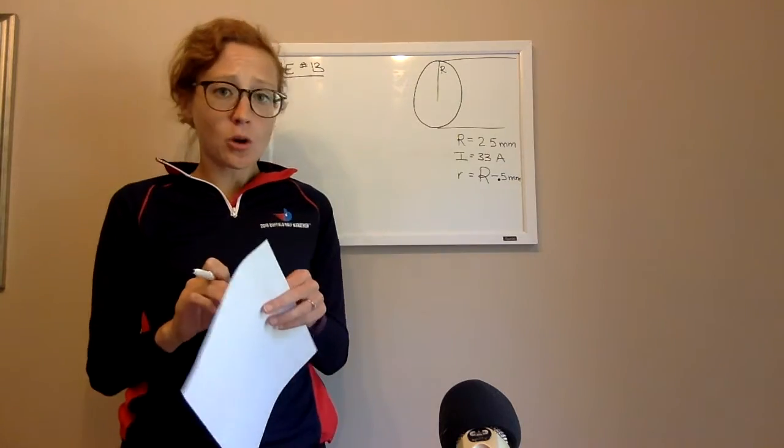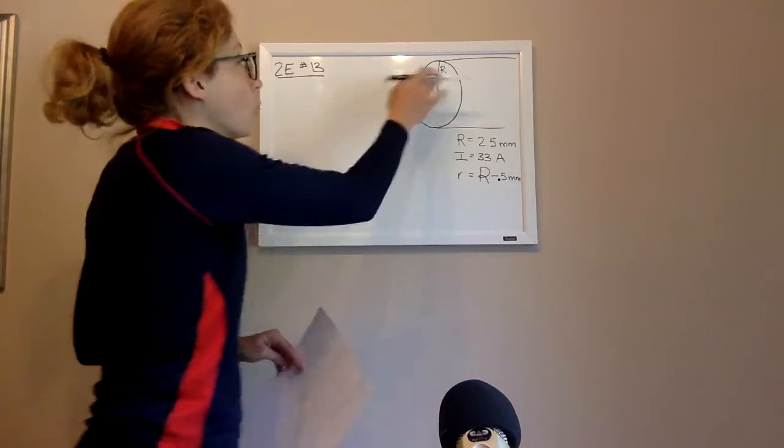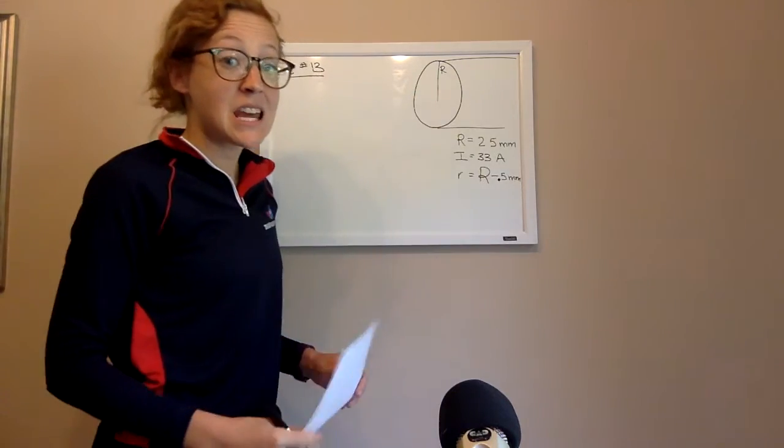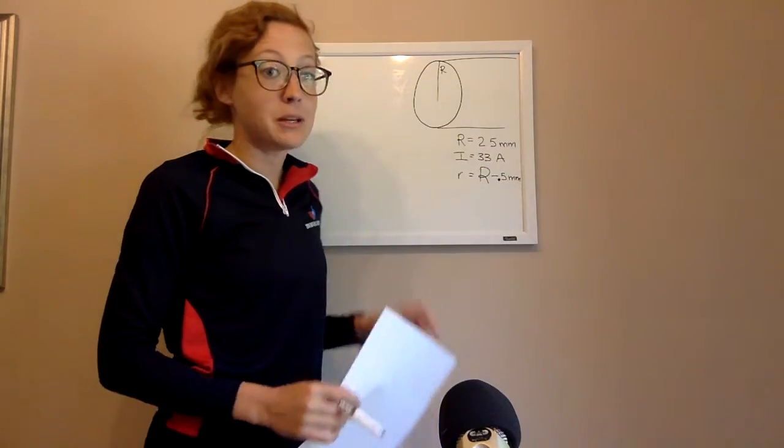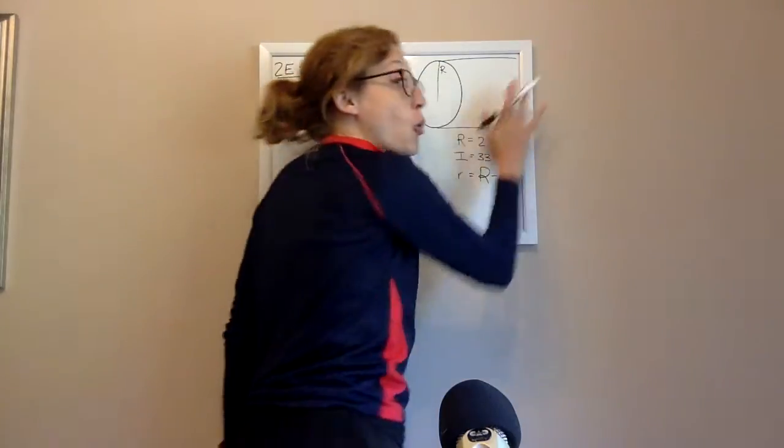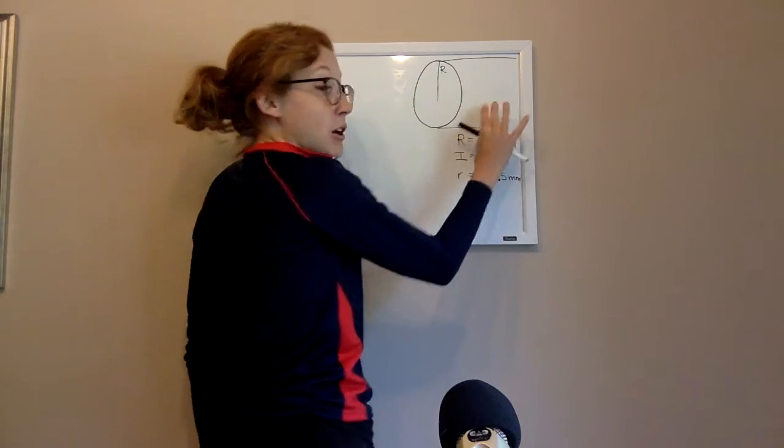It's a basic Ampere's Law question, but it is one that's worth working out. So in this problem, we had a wire that looked something like this. They gave us the cross-sectional radius of the wire. So in this case, it was 2.5 millimeters. And they gave us the total current, which is uniformly distributed throughout this entire wire.